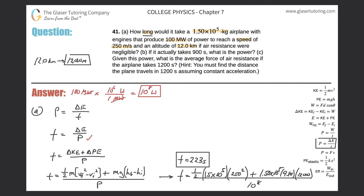Let's take a look at part B. They're asking: if it actually takes 900 seconds, what is the power? So it should take 223 seconds under ideal conditions, but in this case they're saying if it takes 900 seconds, how much power is produced?